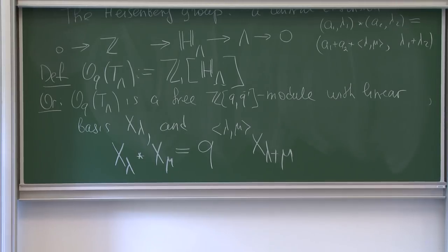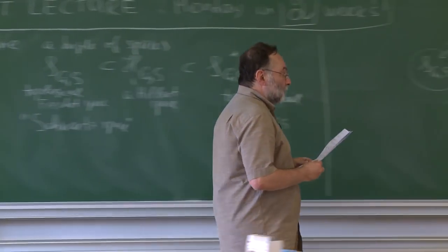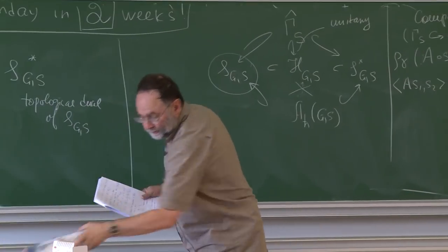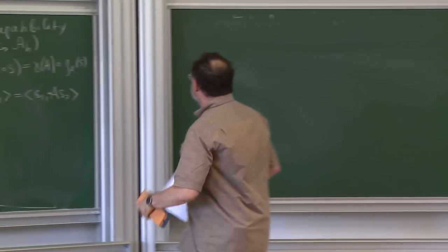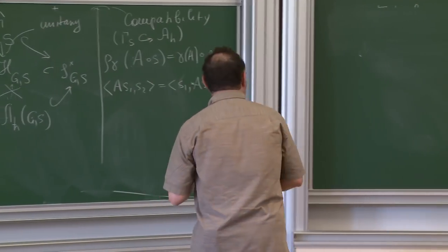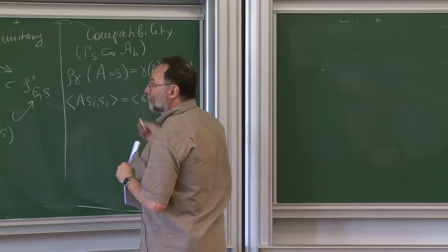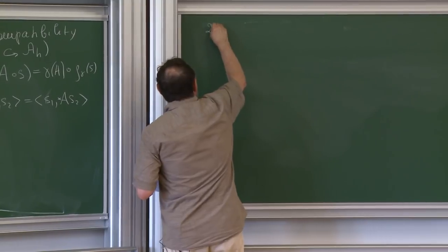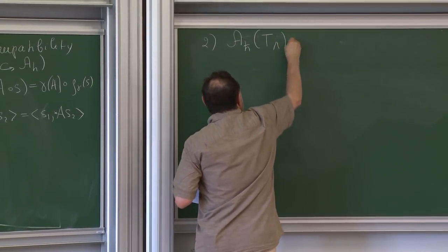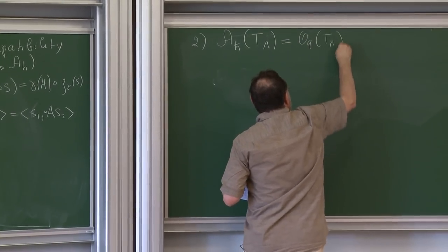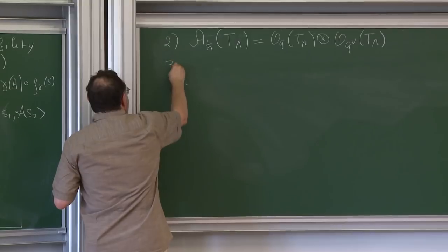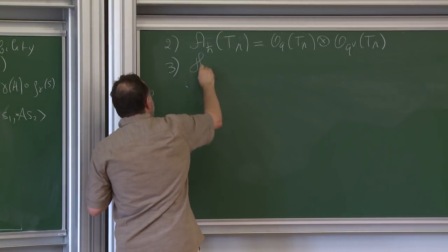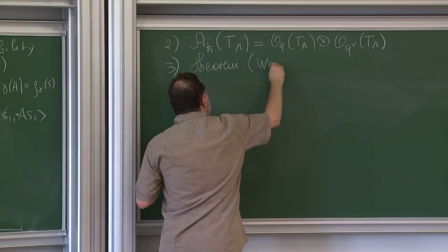We have the quantum torus. Now we take the double of the quantum torus exactly as on the blackboard, and we want to represent it in some Hilbert space. For completeness, A_h of T_lambda is defined as this O_Q of T_lambda. The key part is the theorem — nothing else but an adaptation of the Weil representation, or representation of the integral metaplectic group.